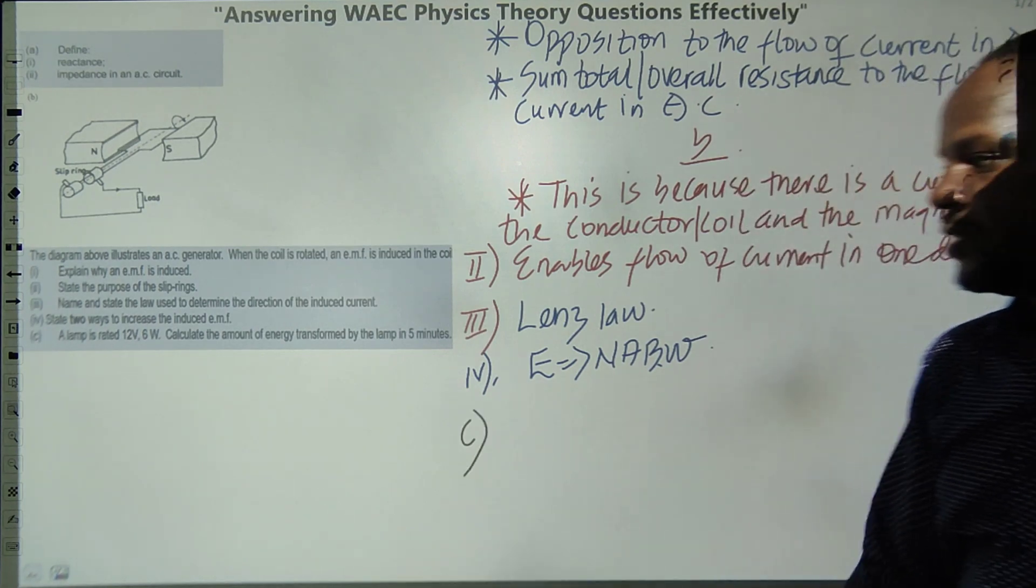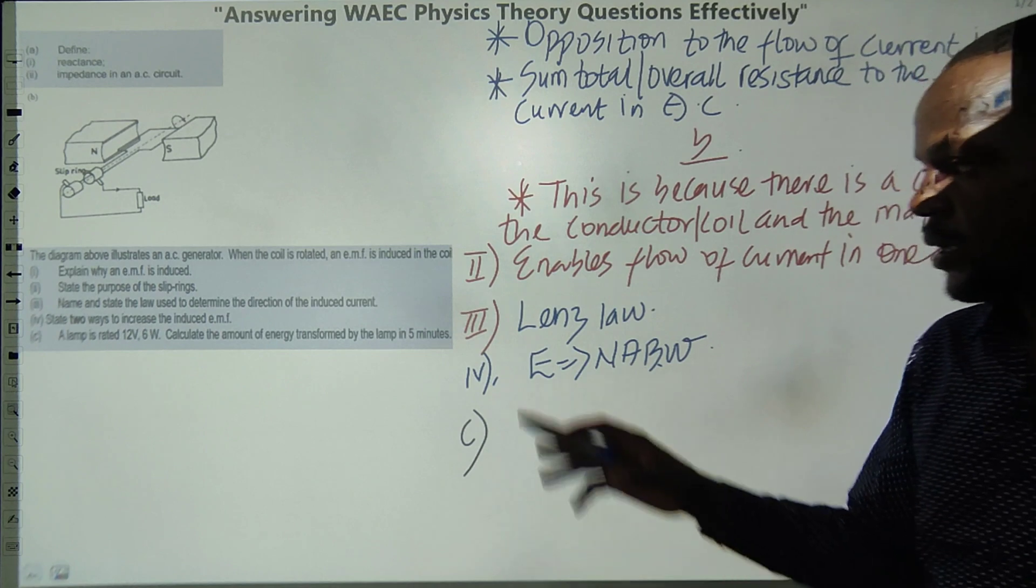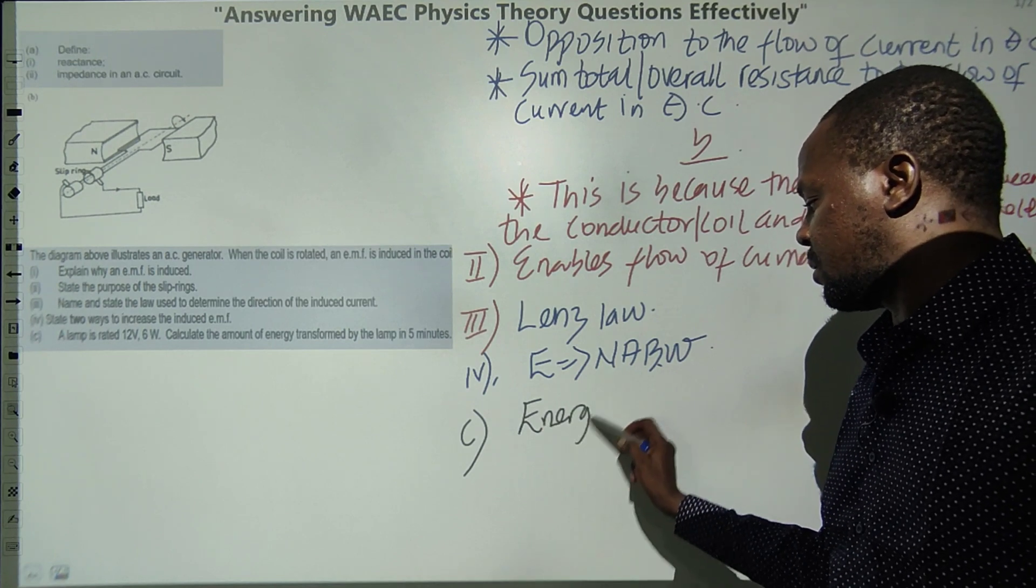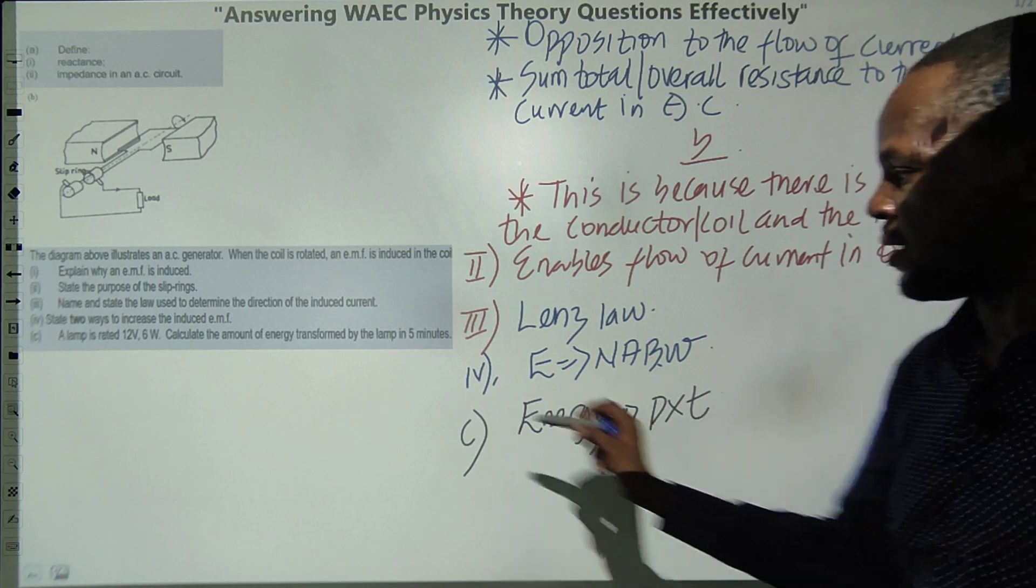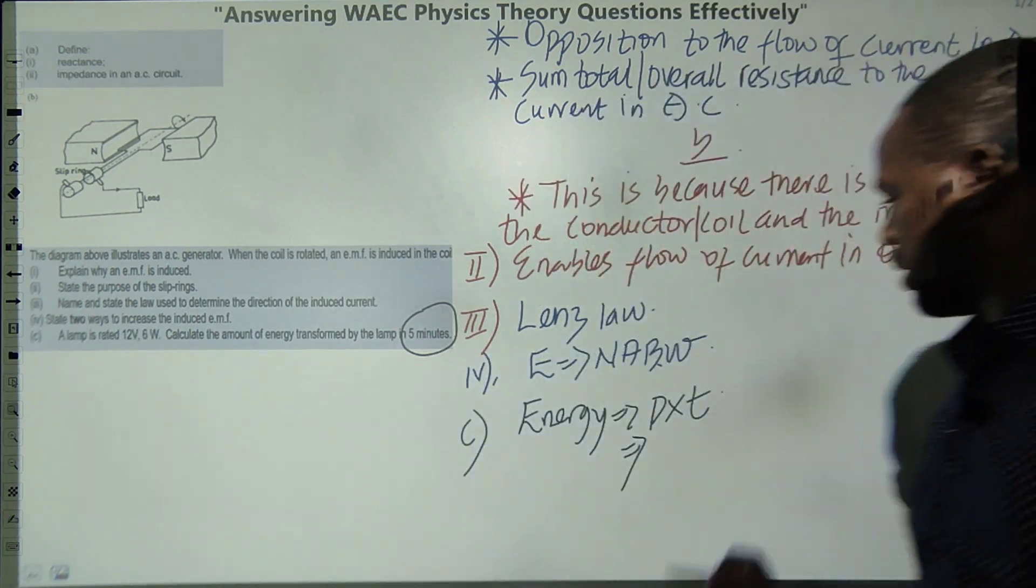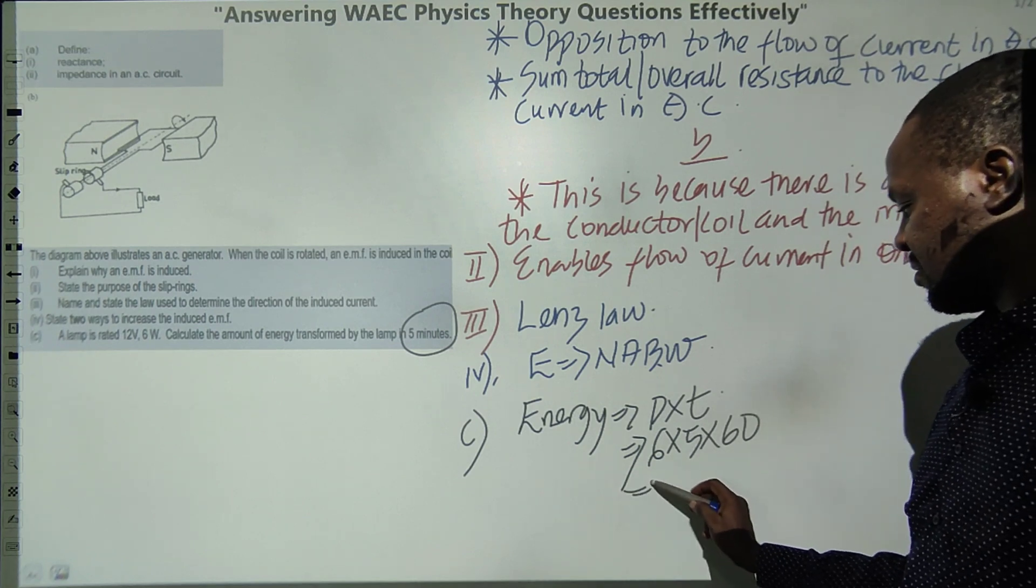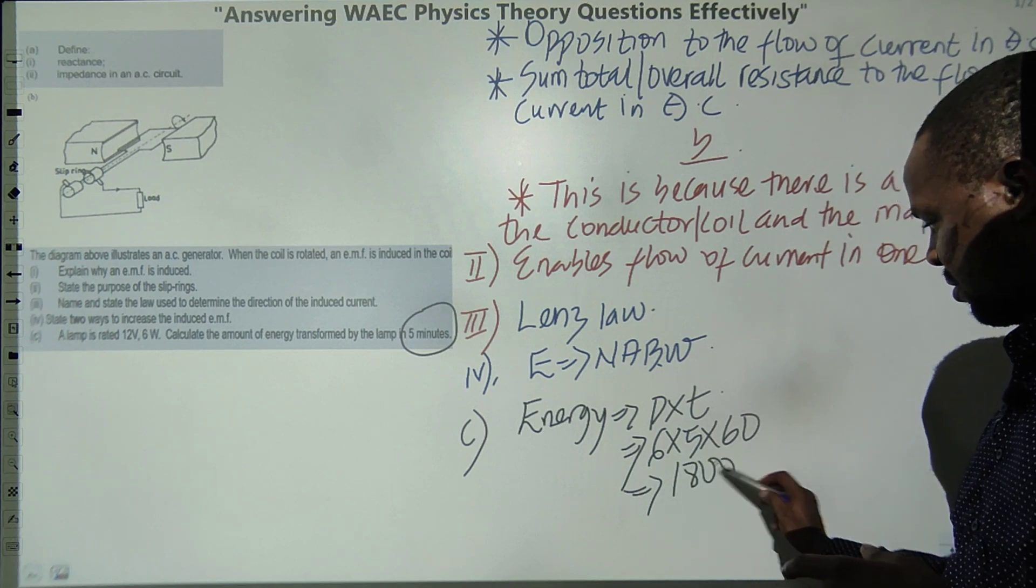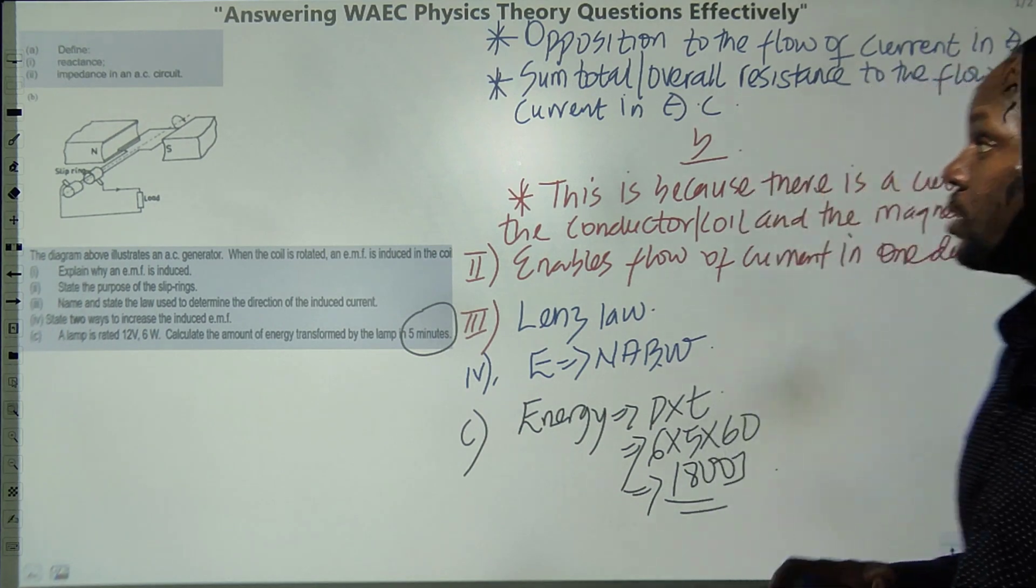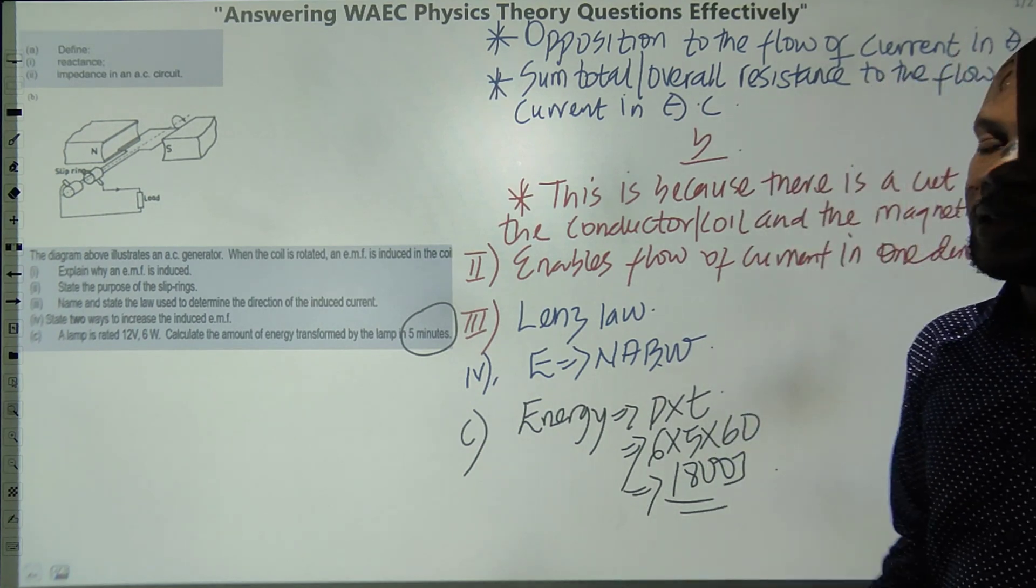The last question, which is the C-type: a lamp is rated 12 volts and 6 watts. Power is 6, voltage is 12. Calculate the amount of energy in 5 minutes. Energy, everybody knows, is power times time. The only thing technical is that the time here will convert to seconds. The power is given as 6 watts. The time is 5 times 60. This is like saying 30 times 10, which gives 1800 joules. I multiply 5 by 60 to convert to seconds. So guys, this is just a short video to tell you how I expect you to answer these types of questions. Good luck in your exam. Take care and bye!